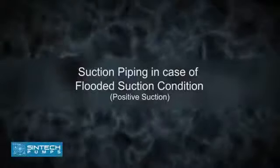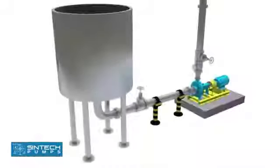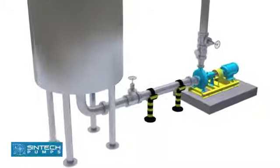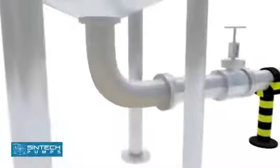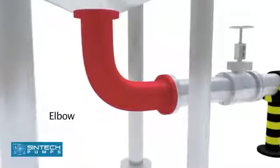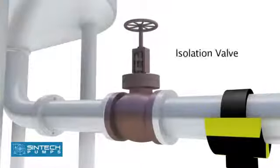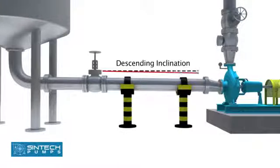Suction piping in case of flooded suction condition (positive suction): In case water is being supplied to the suction through gravity, for example an overhead tank, a slightly different setup is needed. The elbow should be of standard type or long radius type. An isolation valve should be provided in the suction line. The pipe supplying from the tank into the pump should have a descending inclination.